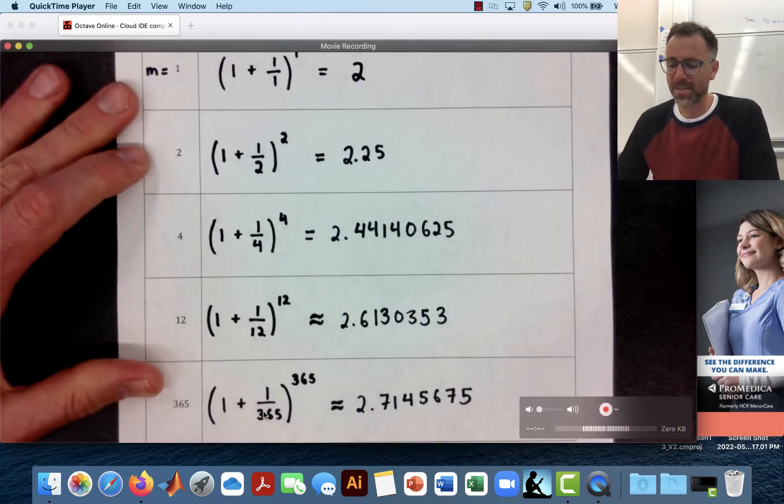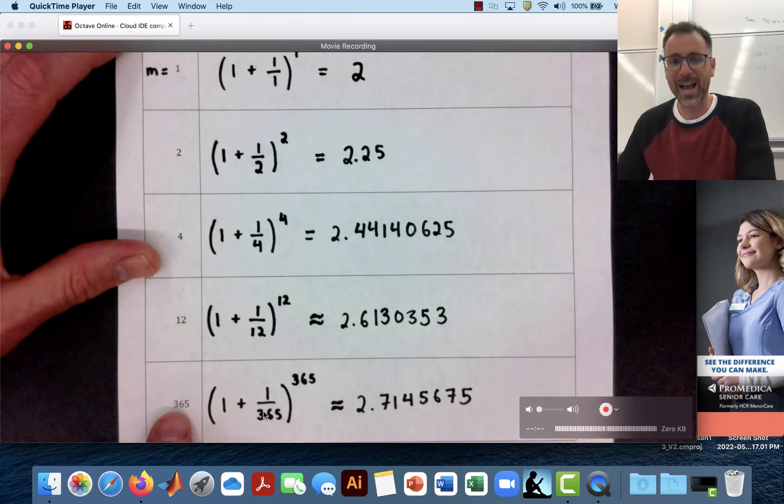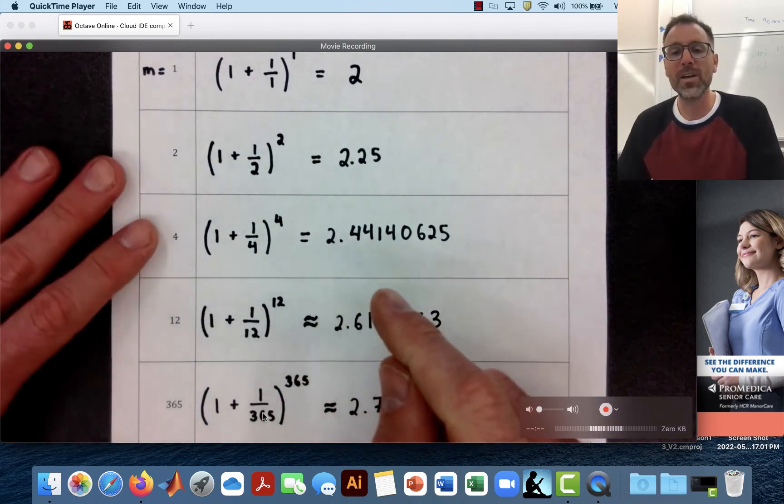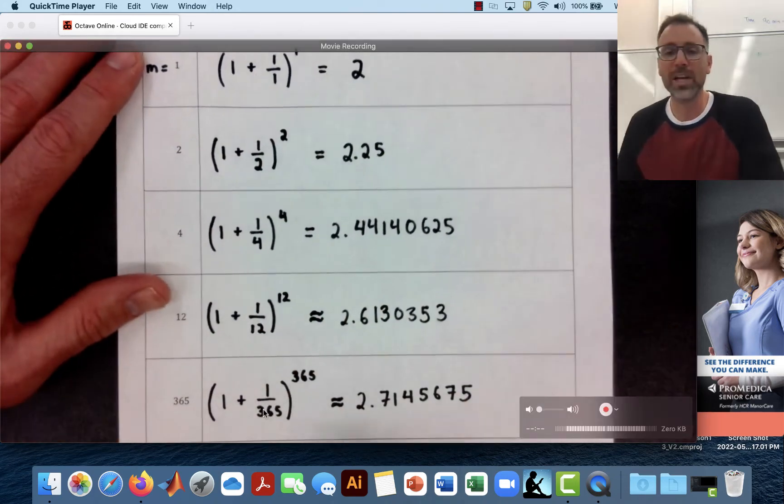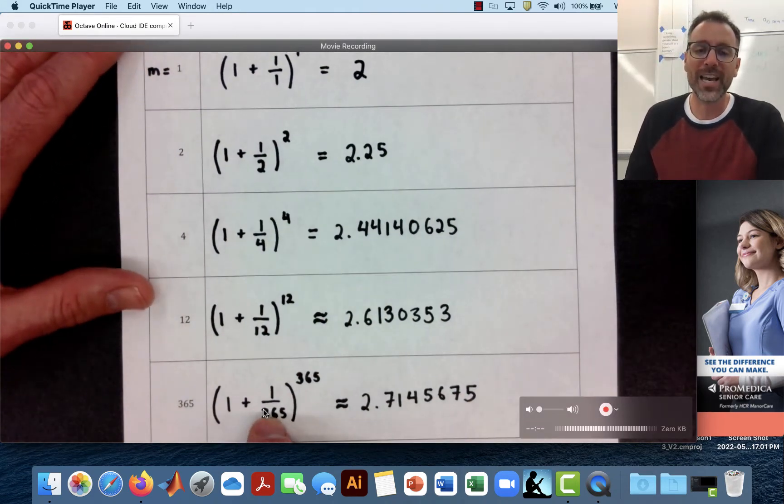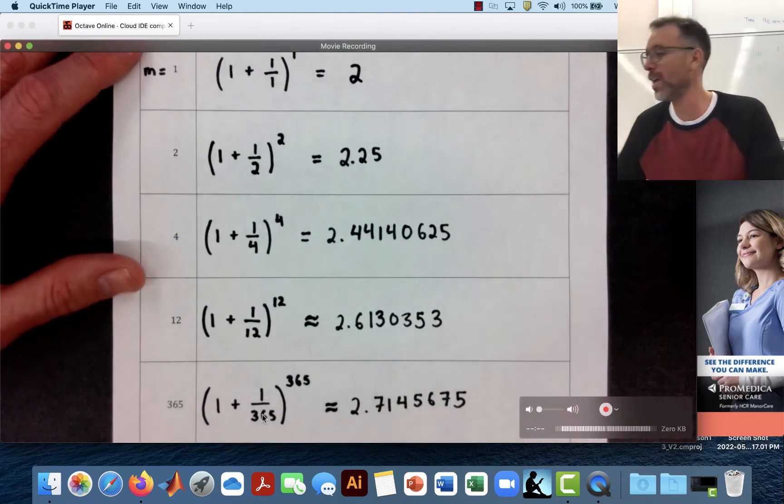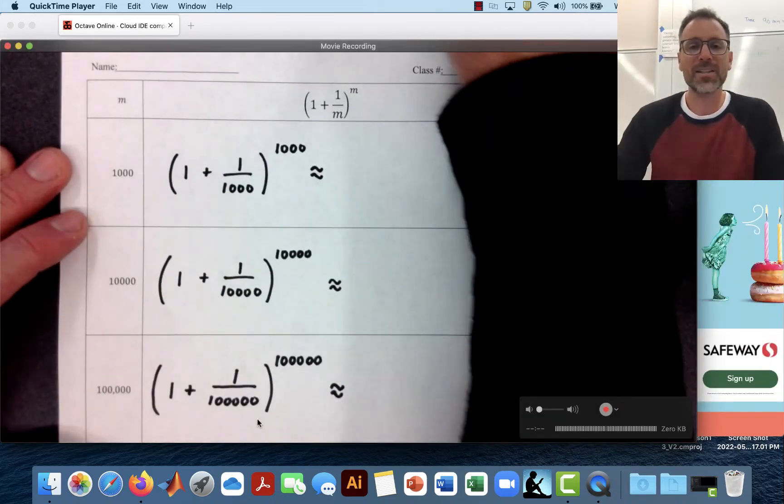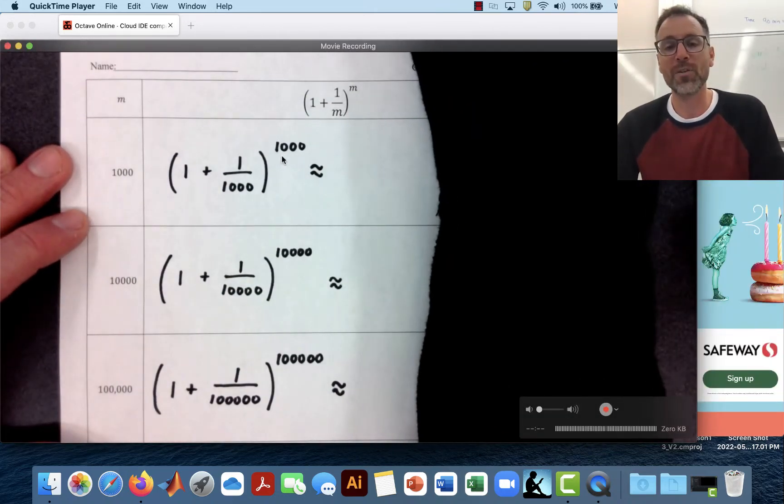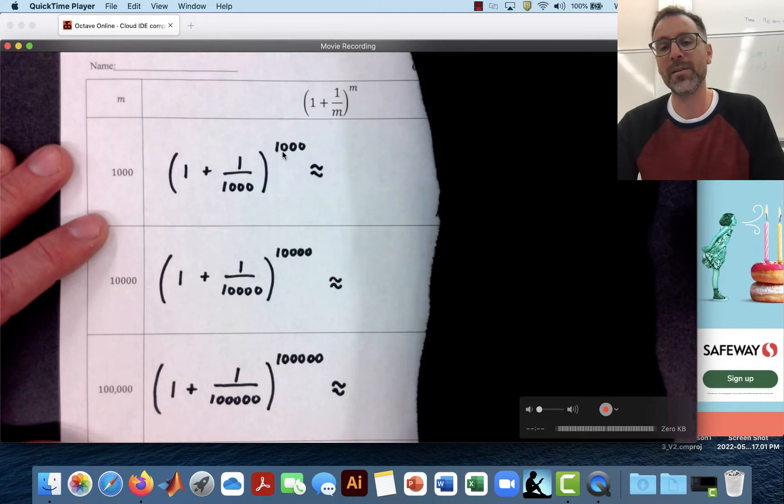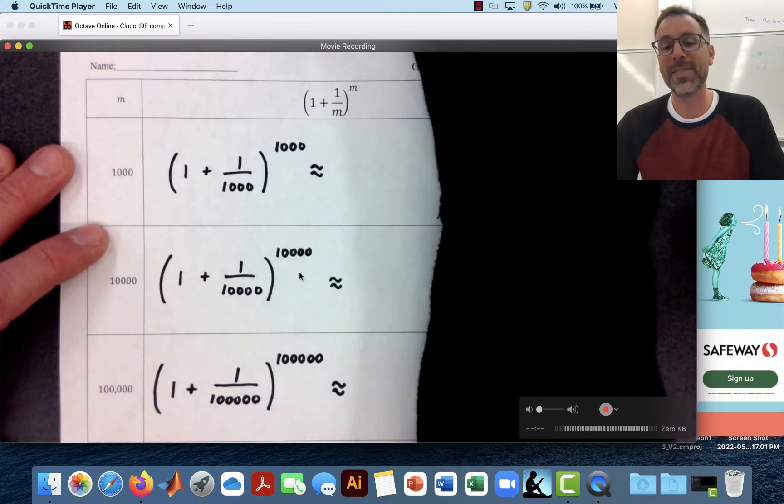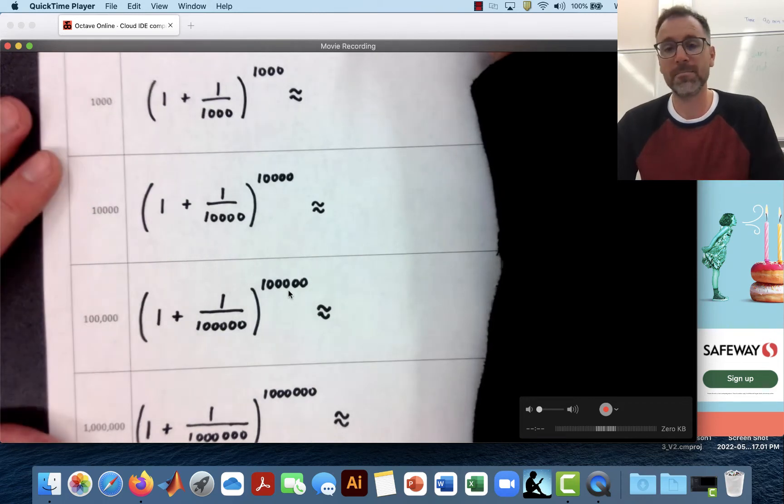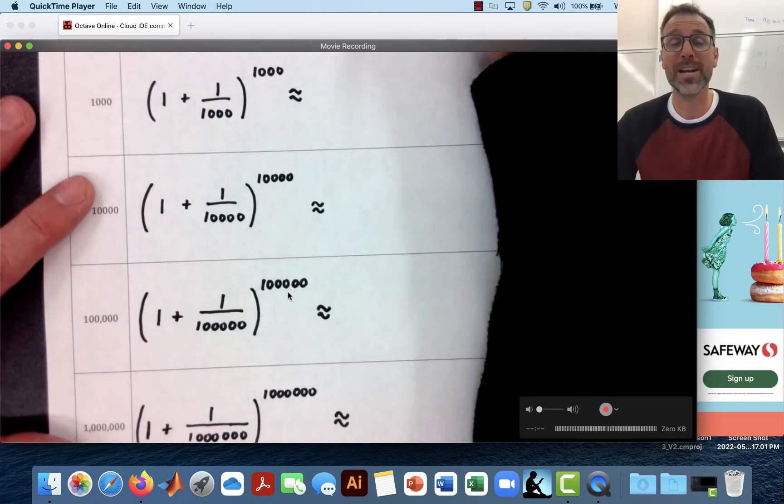And notice that the number of times as it increases, this number increases. And we could ask ourselves the question, well, what happens if we keep doing this over and over and over again? So maybe instead of every day, what if we do it every minute, or every second or every millisecond? And that's kind of this thought here. Maybe we do it a thousand times a year. So once every three times a day, 10,000 times a year, 30 times a day, 100,000 times a year, 300 times a day.